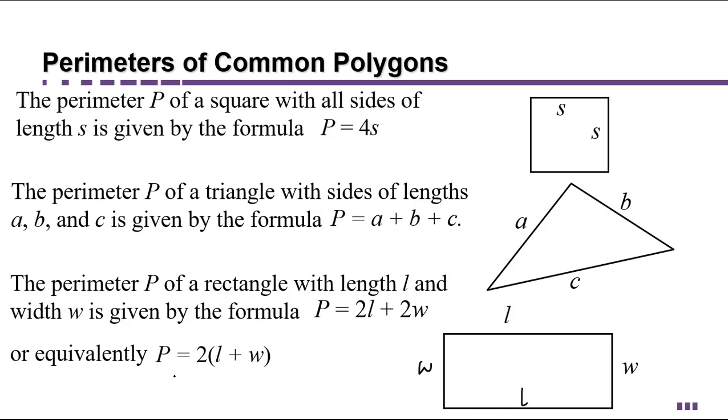Sometimes you'll see the formula in a factored form, where the 2 has been factored out front. What this is saying is you could choose to add l and w together and then double that value.